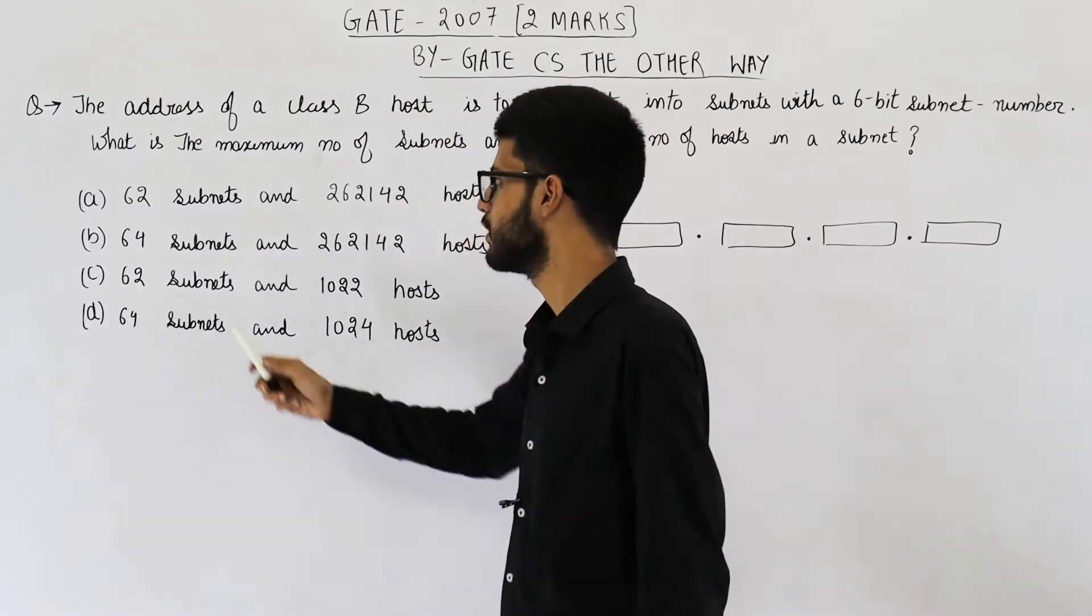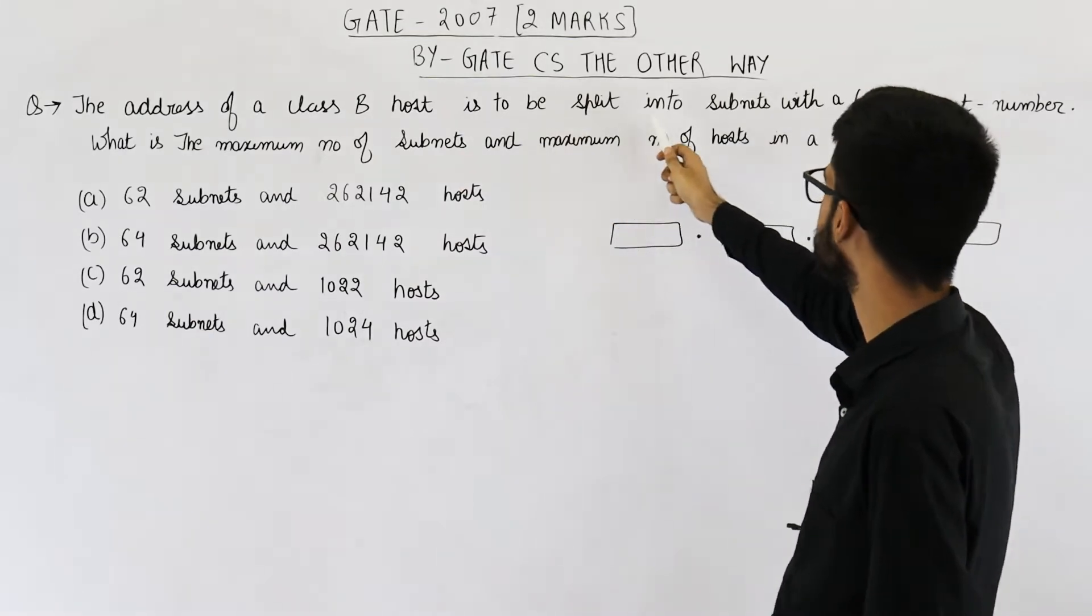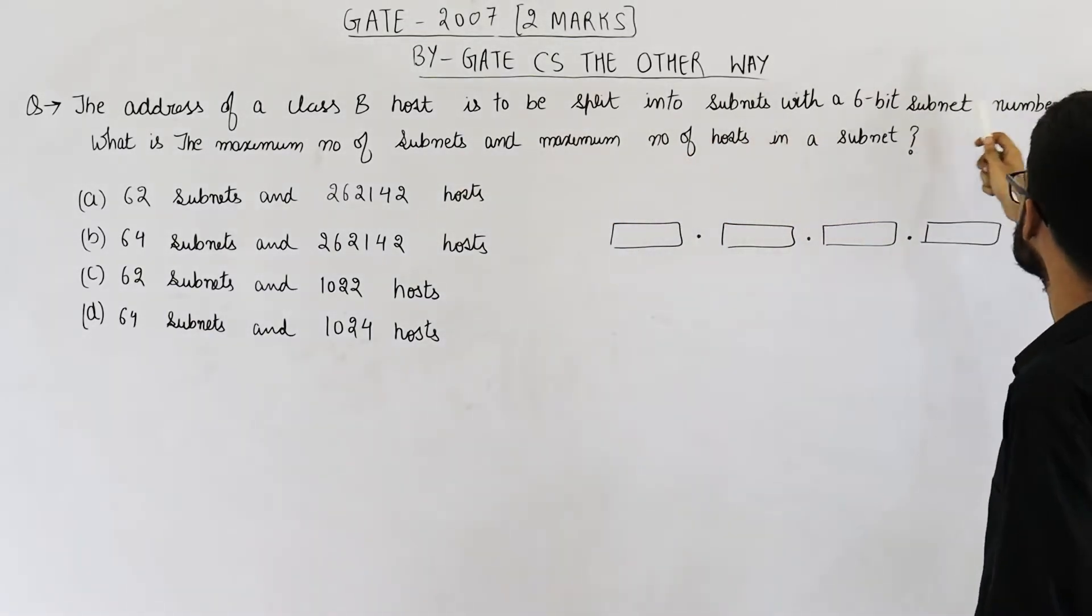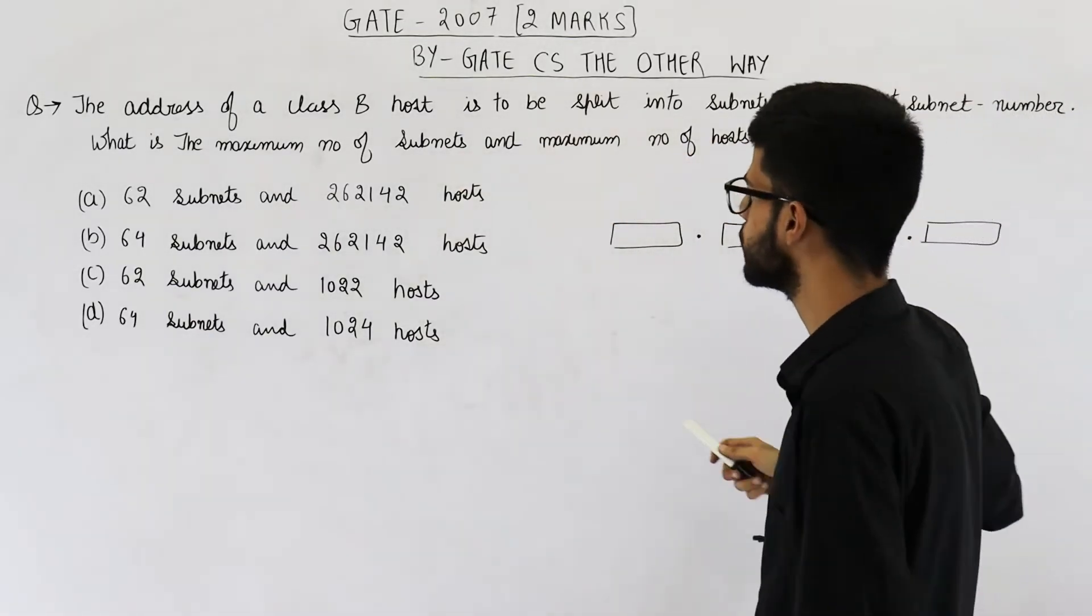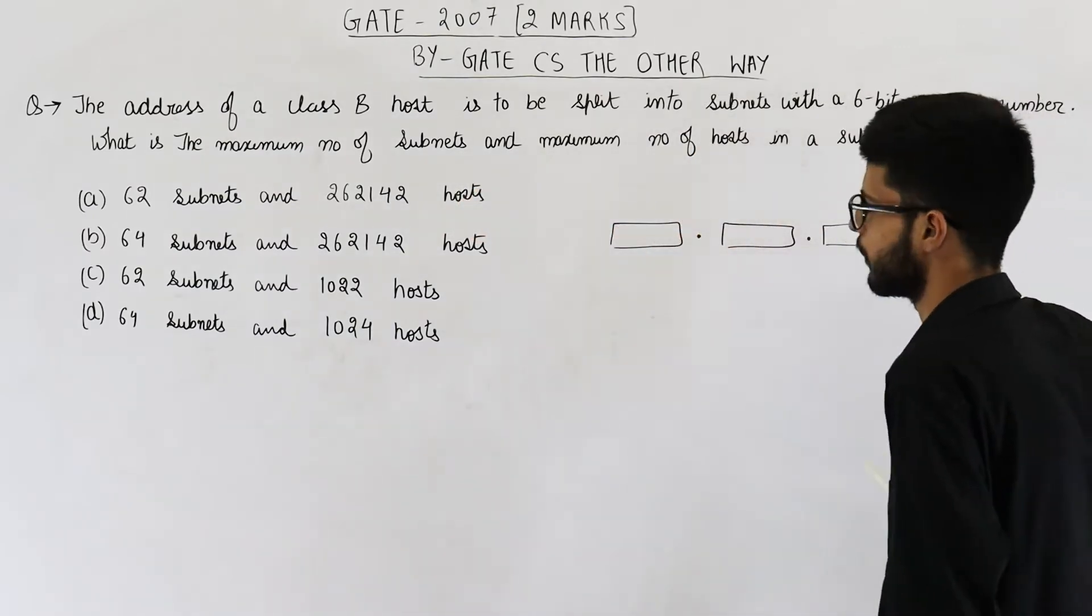Read the statement. They are saying the address of a class B host is to be split into subnets with a 6-bit subnet number. What is the maximum number of subnets and maximum number of hosts in a subnet?